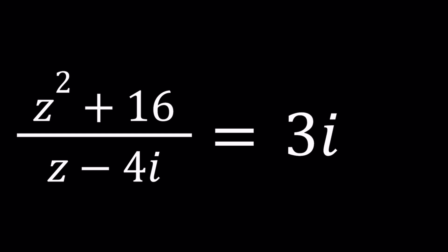Anyways, so we have this equation z squared plus 16 all over z minus 4i. By the way, if you hear any meowing, those are my cats. They like to get into my room, the office. Anyways, so this expression is equal to 3i. Sorry about the distraction. z squared plus 16 divided by z minus 4i is equal to 3i and we're going to be solving for z values.